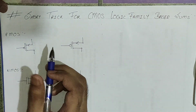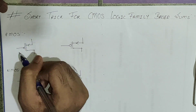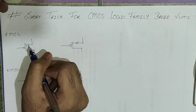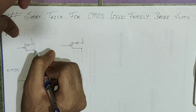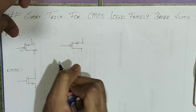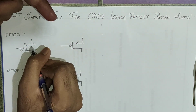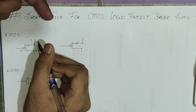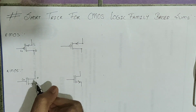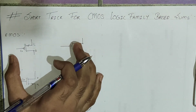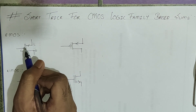Starting with the schematic representation of PMOS and NMOS. For PMOS you will see a bubble and an arrow at the source terminal. The source of PMOS is here, drain is here, and gate is here. The arrow is always at the source terminal. For NMOS the arrow is here, with source here, drain here, and gate here.